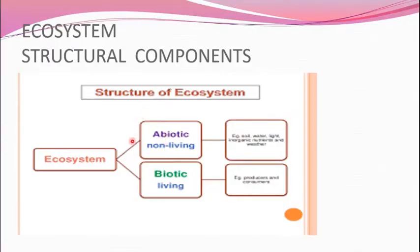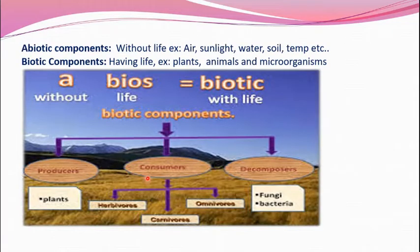Ecosystem structural components can be broadly classified as abiotic and biotic. Abiotic means non-living, without any life, where living organisms interact with non-living components. Examples of abiotic components include sunlight, water, soil, and temperature. Biotic components include plants, animals, and microorganisms.